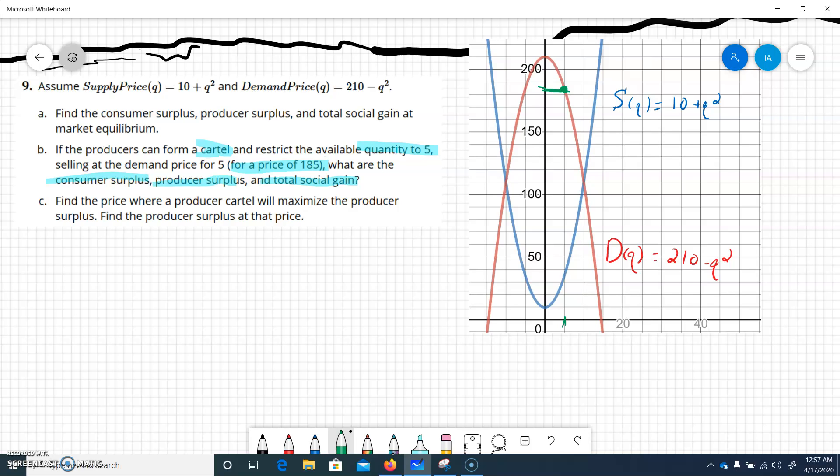Let me kind of draw this out to contain it in the curves. So what we have here, above this green line, is what people were willing to pay but did not have to pay. That's the consumer surplus.